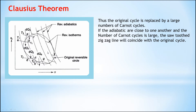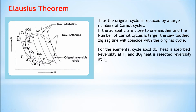The original cycle is thus replaced by a large number of Carnot cycles. If the adiabatics are close to one another and the number of Carnot cycles is large, the sawtooth zigzag line coincides with the original cycle. For the elemental cycle A-B-C-D, dQ₁ is the heat supplied reversibly at temperature T₁, and dQ₂ is the heat rejected reversibly at temperature T₂.